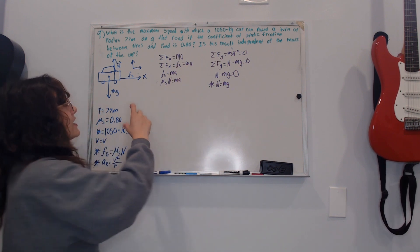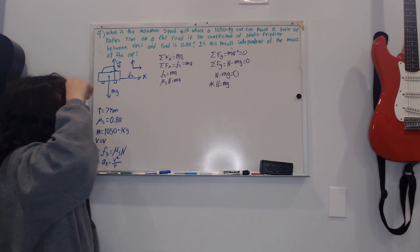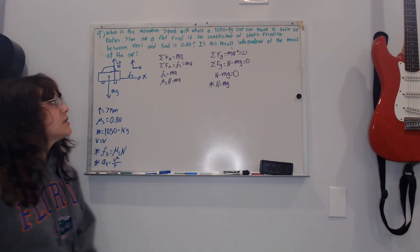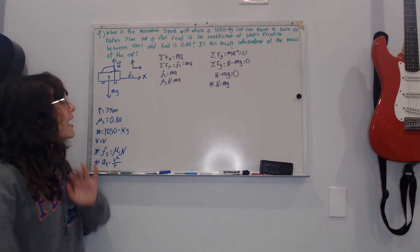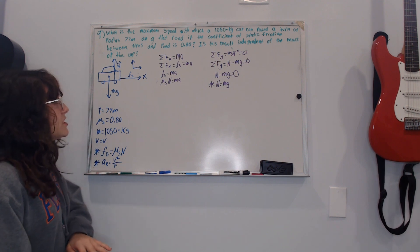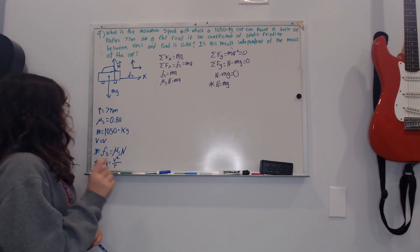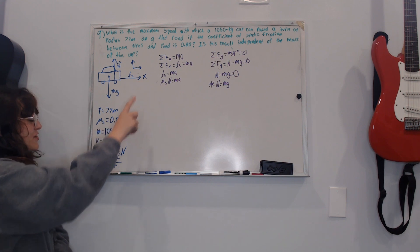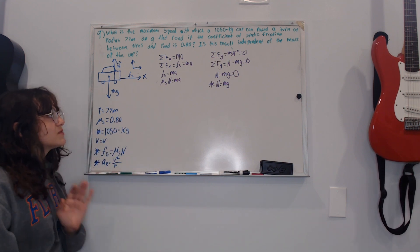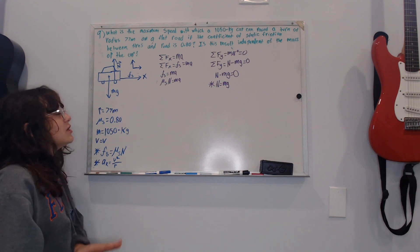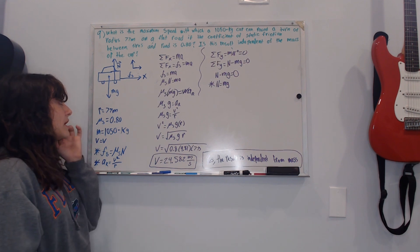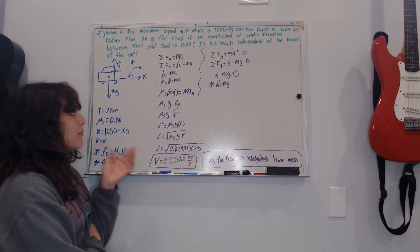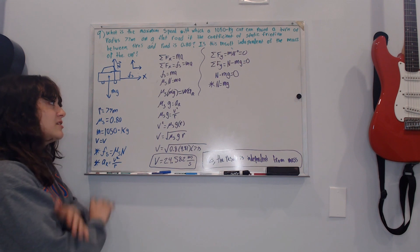For the summation of forces along the x-axis: static friction equals mass times acceleration. Since static friction equals mu times N, I substitute to get mu times N equals m times radial acceleration. Plugging in N equals mg gives mu times mg equals m times radial acceleration. Dividing both sides by m, the masses cancel out, leaving mu times g equals radial acceleration.